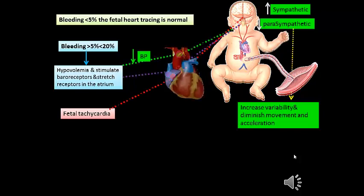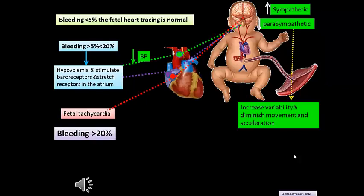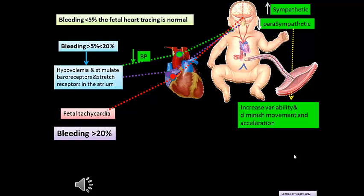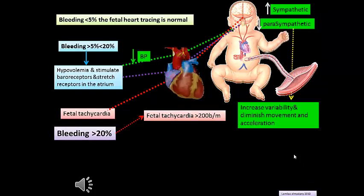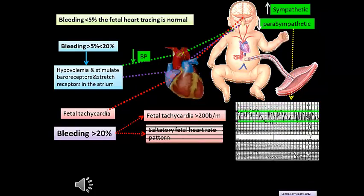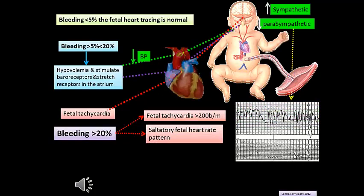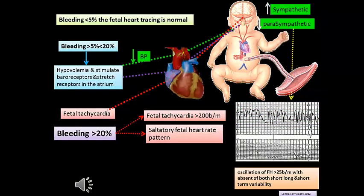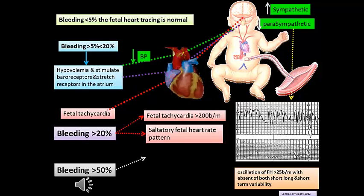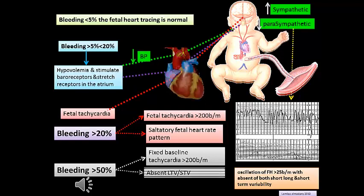Fetal heart rate tachycardia may develop. If bleeding exceeds 20%, there will be generalized vasoconstriction conserving blood for vital organs — the brain, heart, and adrenal glands — and fetal tachycardia will be more than 200 beats per minute. A saltatory fetal heart rate pattern will be present, characterized by oscillations of more than 25 beats per minute with absent short- and long-term variability. If bleeding exceeds 50%, this leads to more generalized vasoconstriction, a fixed baseline tachycardia more than 200 beats per minute, and absent long-term and short-term variability — this is what we call the sinusoidal pattern.